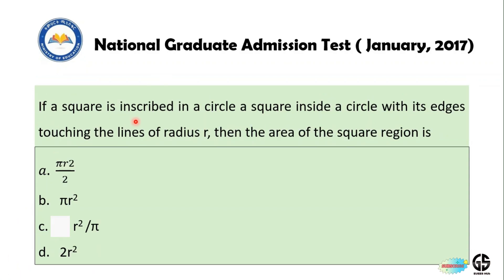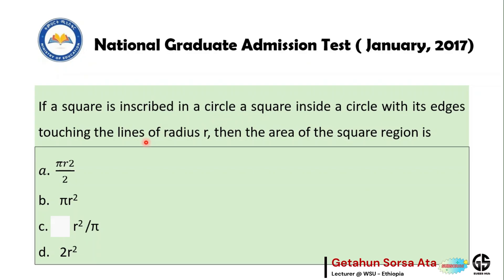The next question: if a square is inscribed in a circle with its vertices touching the circle of radius r, then the area of the square is: a) πr²/2, b) πr², c) r²/π, d) 2r².